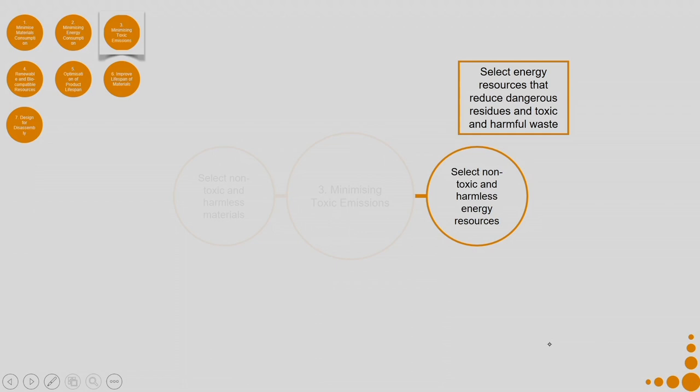For example, thermal power generation involves burning coal, resulting in a lot of toxic emissions and greenhouse gases. Nuclear power generation also has chances of toxic emissions or toxic waste. But if you generate electricity using solar power, wind power, or tidal energy, there is no chance of residue or toxic and harmful waste.